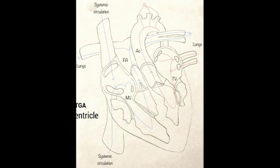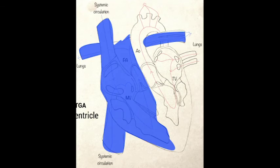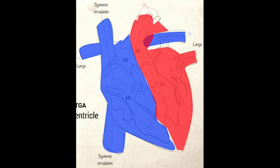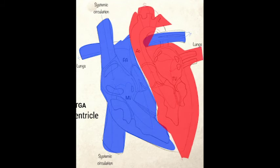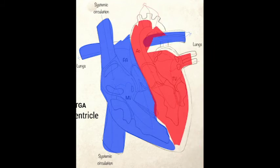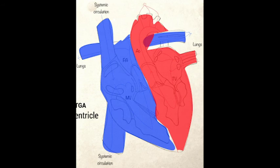Given the presence of both atrioventricular and ventriculo-arterial discordance, the circulation is still physiologically normal in CCTGA. Deoxygenated blood is pumped to the lungs to be oxygenated and oxygenated blood is pumped out to the body. However, the morphologically right ventricle (RV) is pumping blood to the body in place of the morphologically left ventricle (LV), and this can typically lead to heart failure over time.